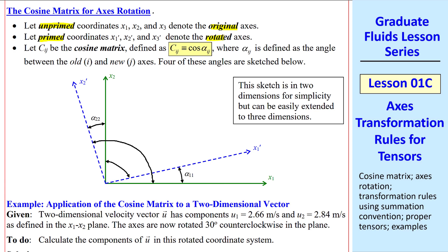In my sketch, the green unprimed axes are the original, and the blue primed coordinates are the rotated axes. I note that this sketch is two-dimensional, but we can easily extend this to three dimensions out of the plane. Using this definition of alpha_ij, alpha_11 is the angle from the original or old axis 1 to the new axis 1, shown here. And similarly, alpha_22 is the angle between the original x2 and the new x2.